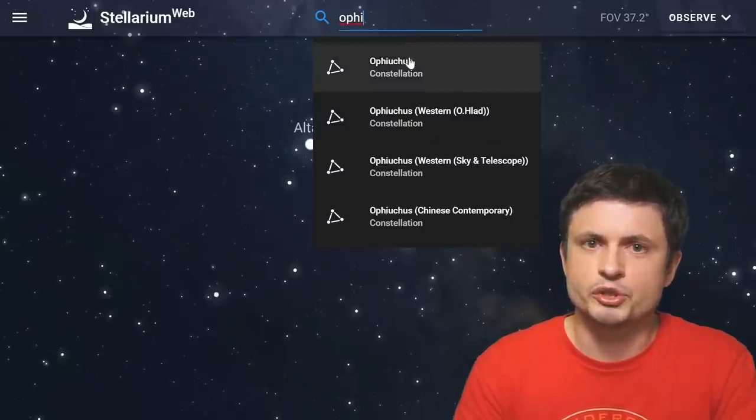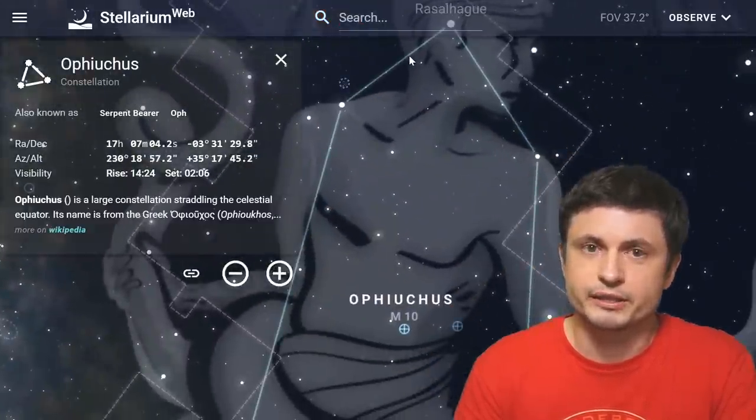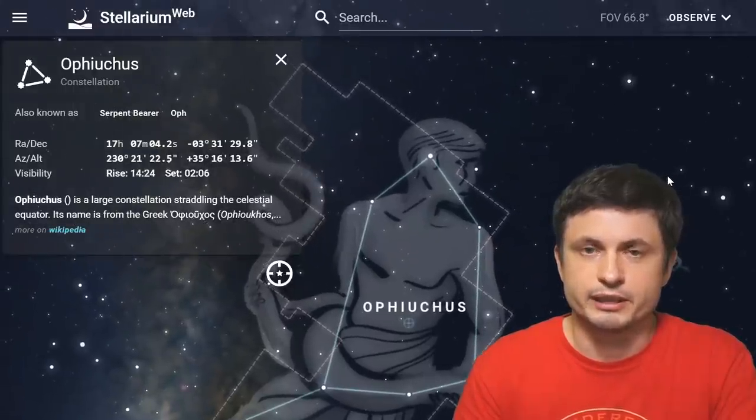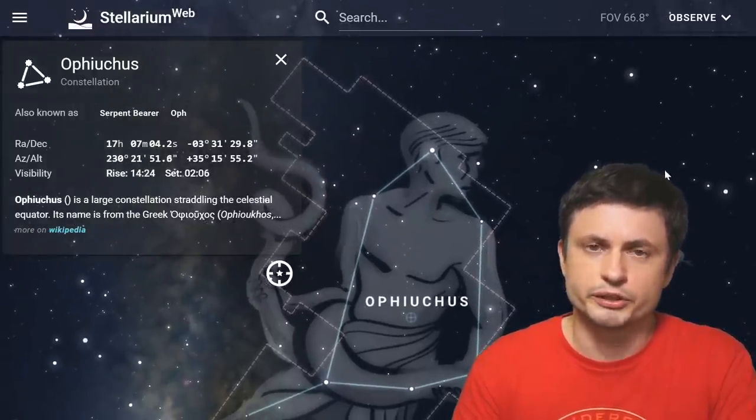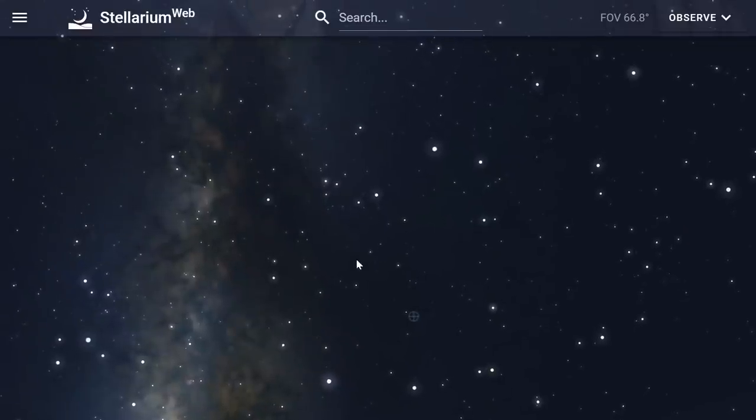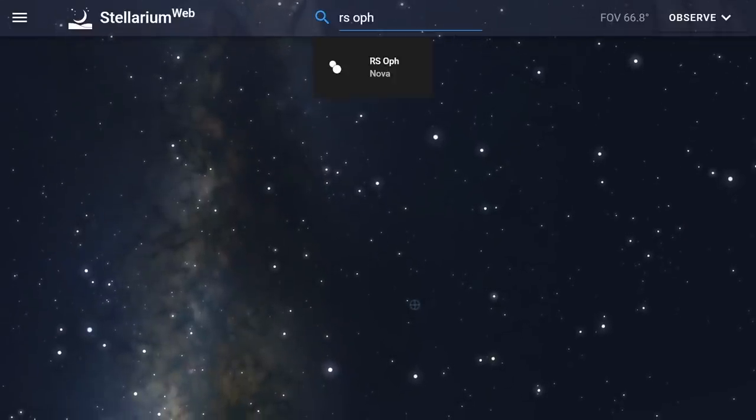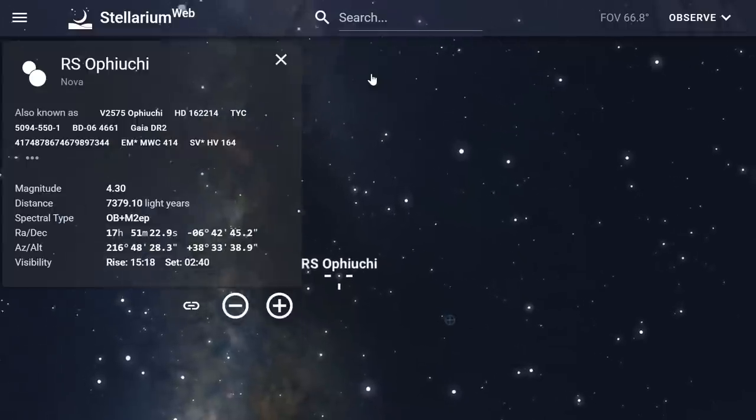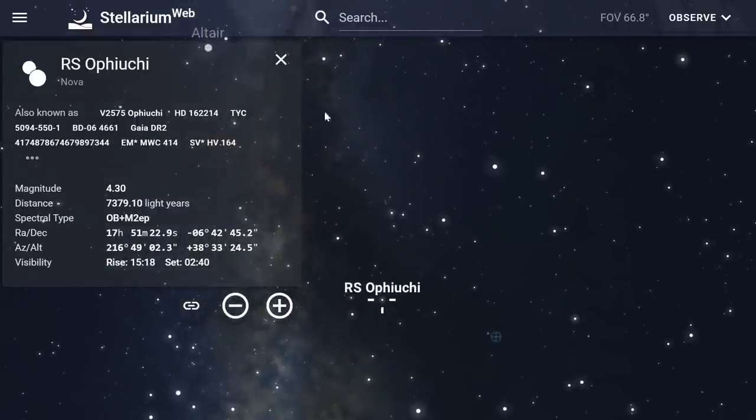Now, we are looking for a constellation of Ophiuchus. Once you click on it, you'll see something like this. Now, specifically, we're looking for a star known as RS Ophiuchus. And interestingly enough, it's already represented as a nova in Stellarium as well. Here, if you type RS Ophiuchus, you'll see where this nova is located pretty much right away.